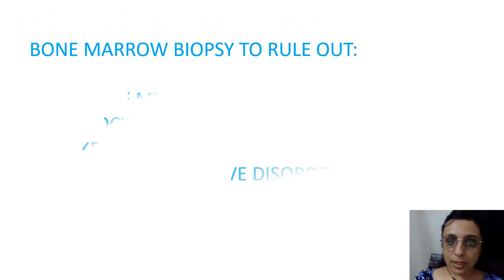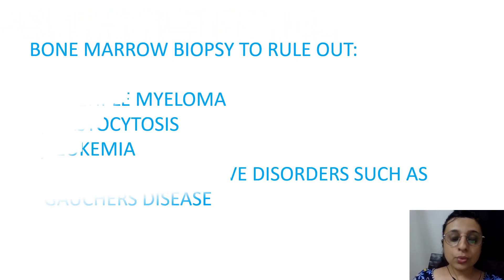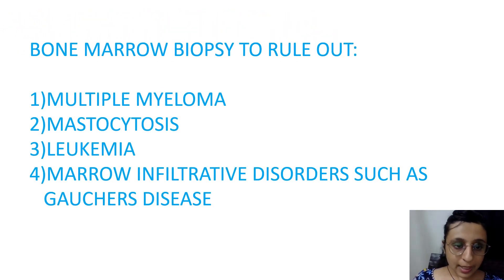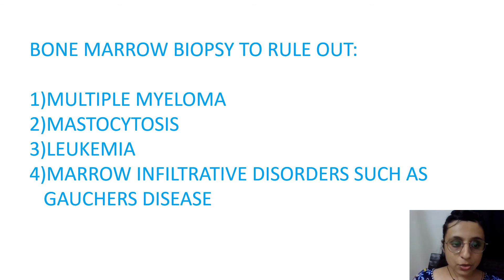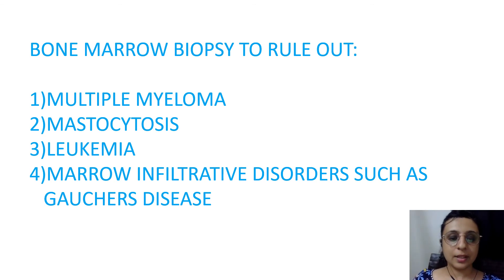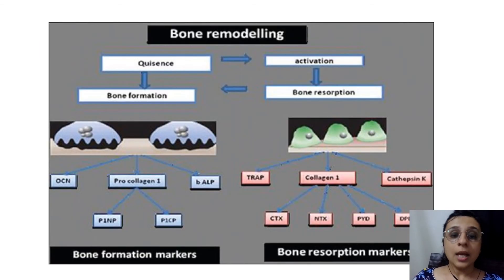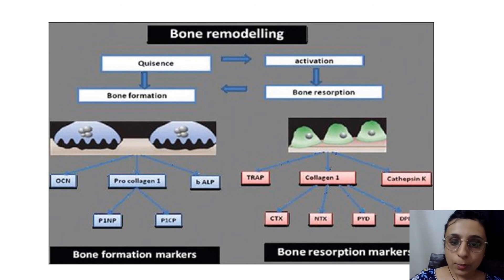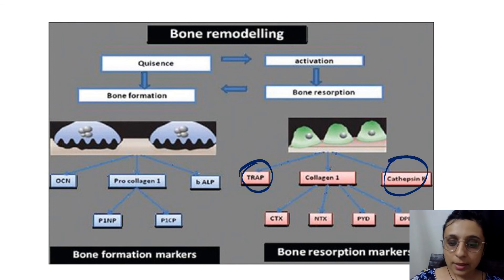Bone marrow biopsy can be done to rule out underlying malignancy such as multiple myeloma, mastocytosis, leukemia, and infiltrative disorders like Gaucher's disease. In bone remodeling, there are certain bone resorption markers like TRAP and cathepsin that can be used.